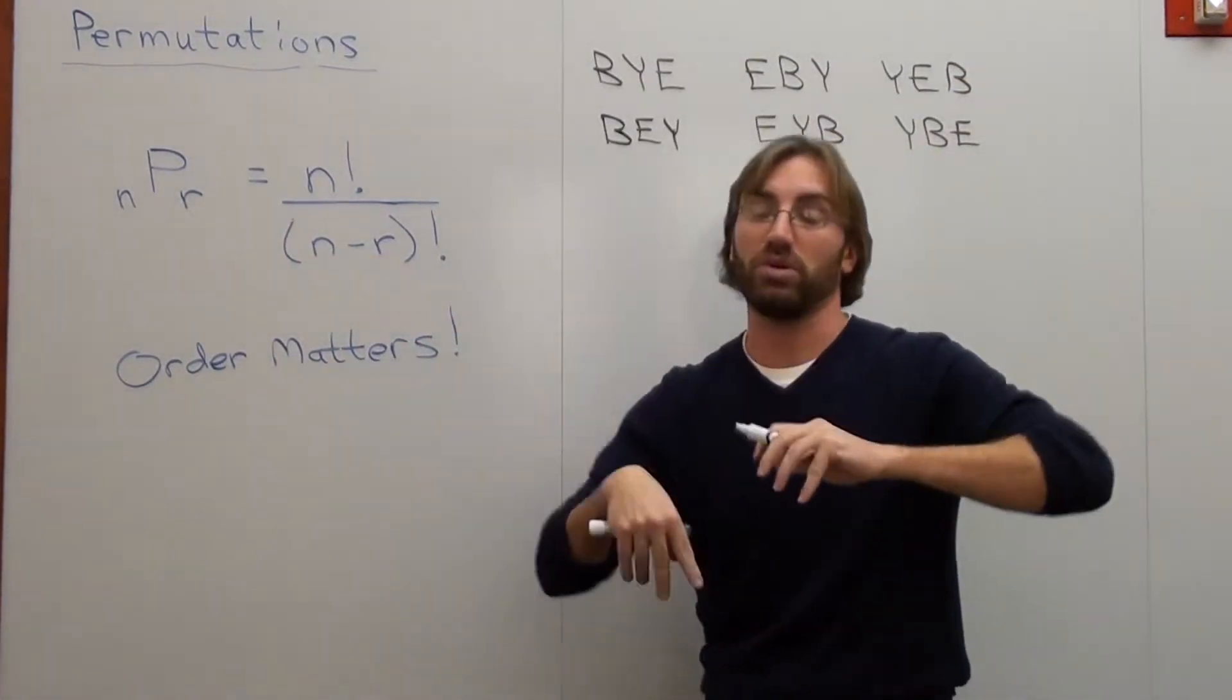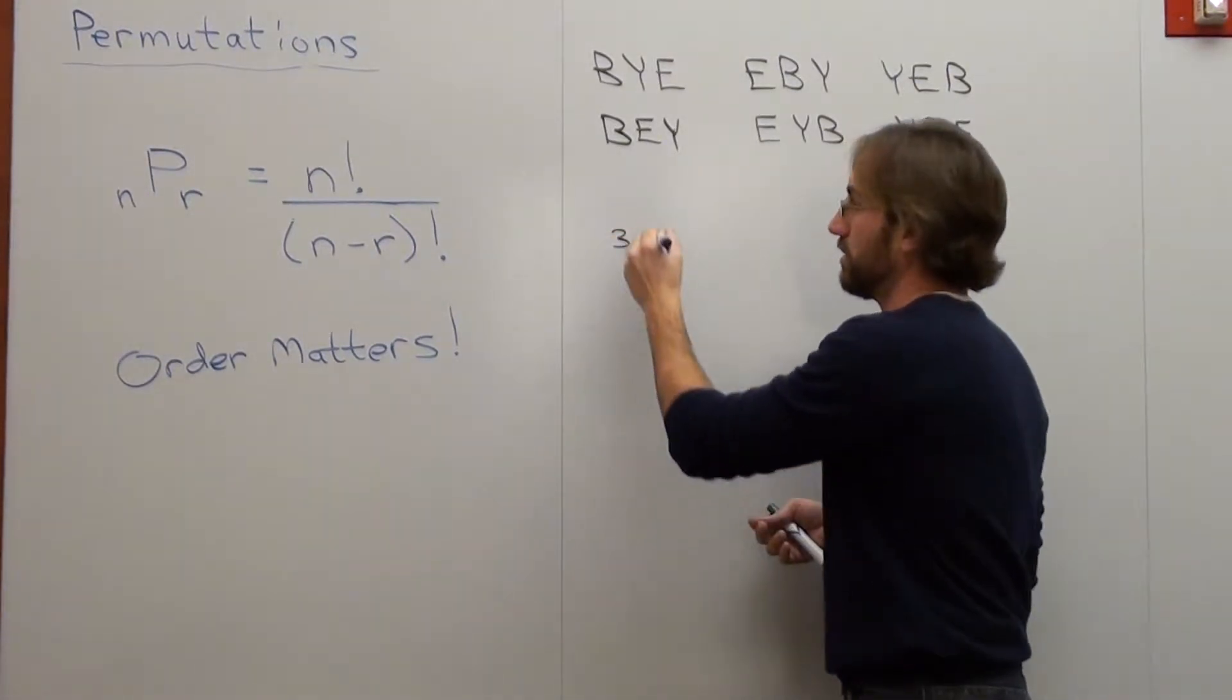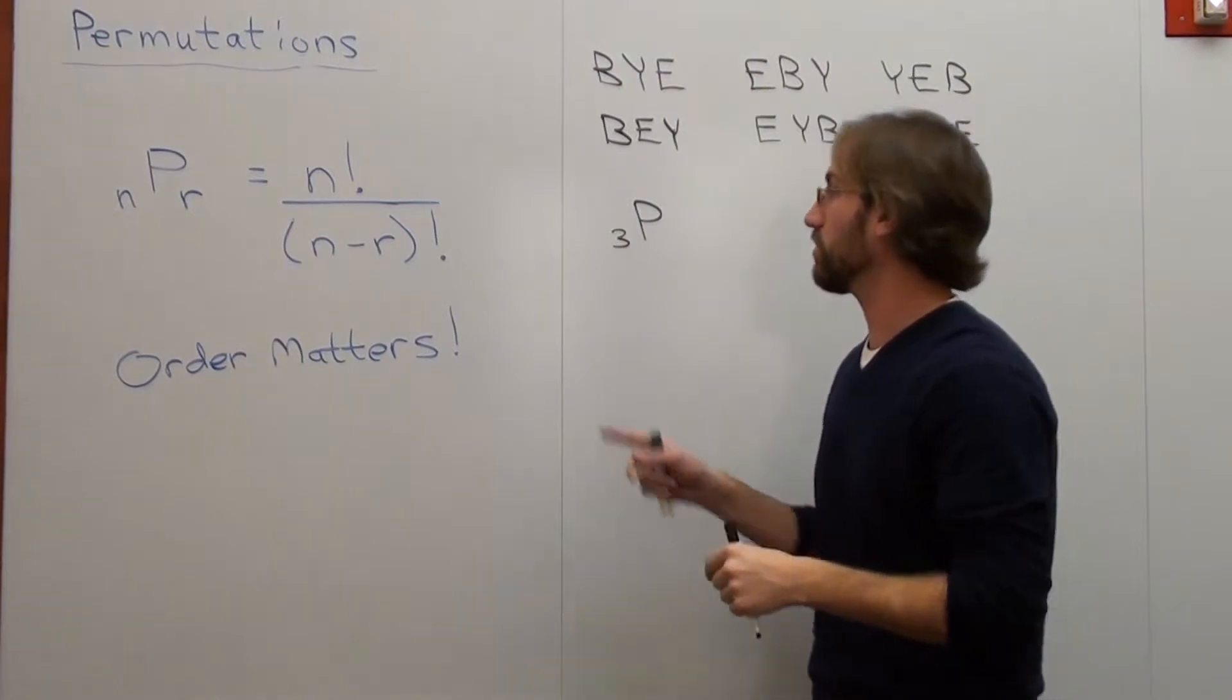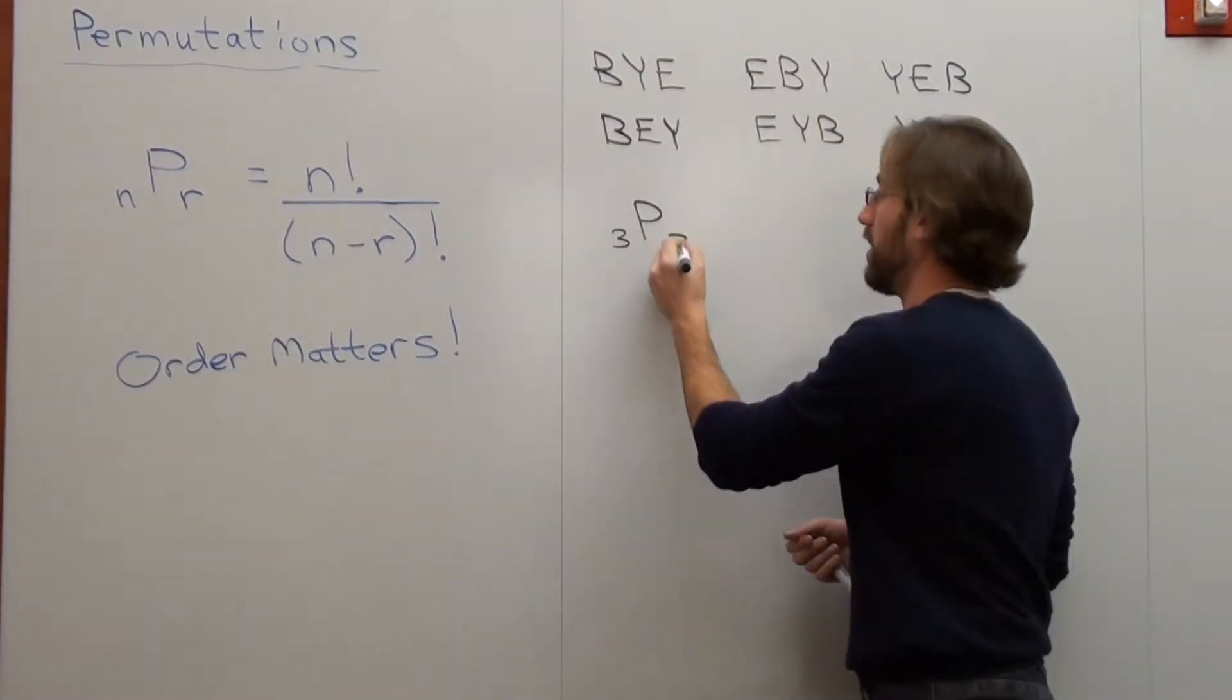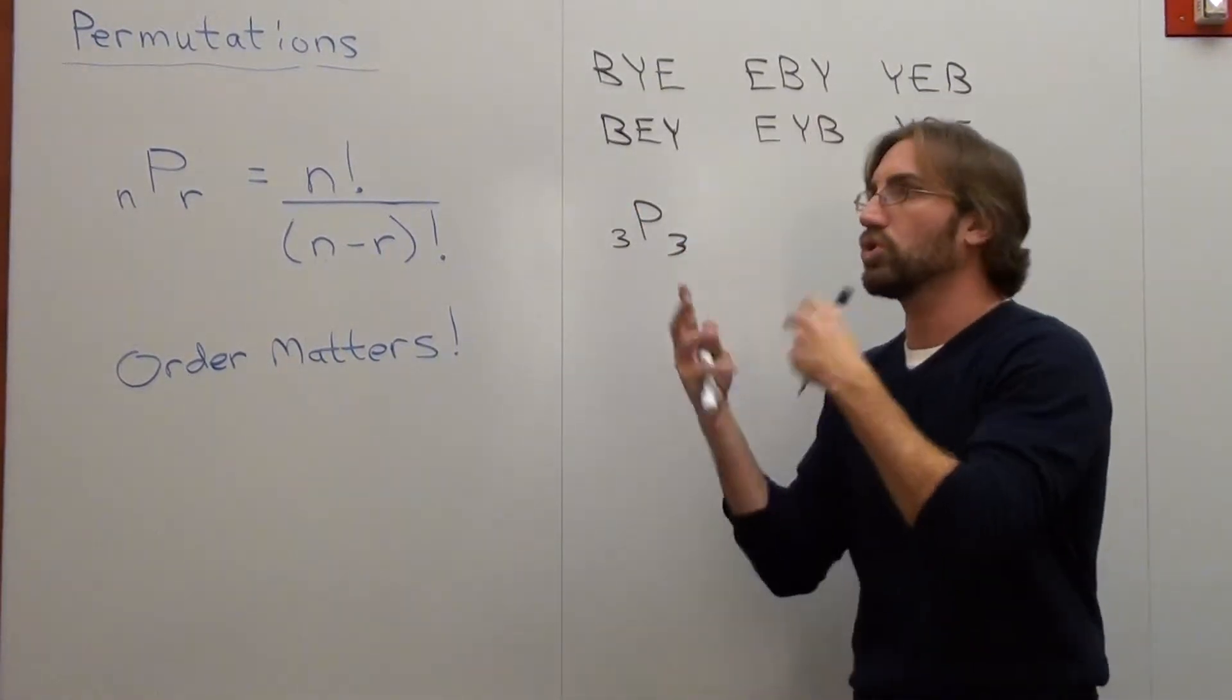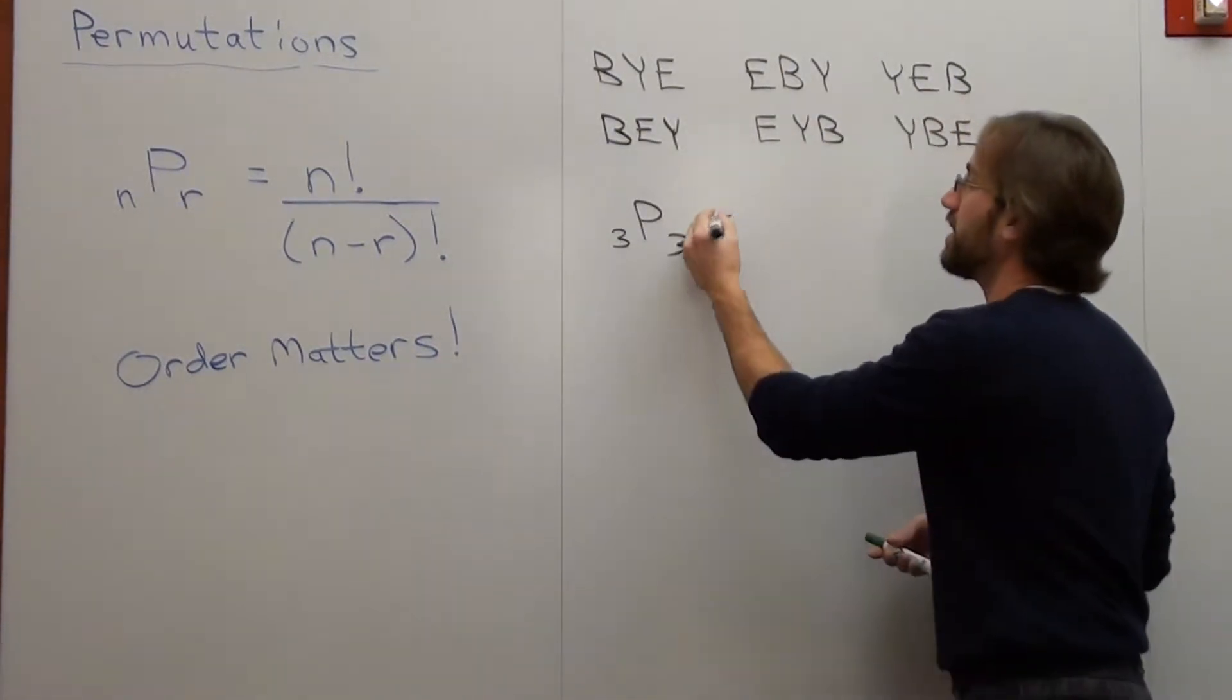So I want to find the permutation. I want to find how many times you can write the word BYE. So I'm working with three letters on my permutation where order matters, and my total is three, and I want to rearrange three of the letters. So my R is also three. N is the total that you're working with. R is what you want to rearrange, and I'm going to rearrange all three of these letters.